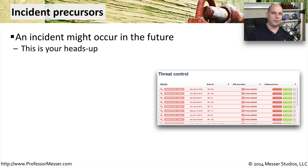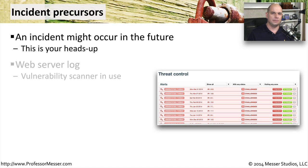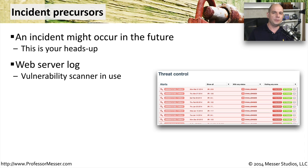One way to do that is to look at different pieces of our network to understand where these changes or significant precursors may be happening. One place to gather these precursors is in something like a web server log. You can look at what people are hitting your web server, and you can also see when different devices or scripts may be running automated vulnerability checks against your servers. This may give you a heads up that somebody is trying to gain access into your systems.